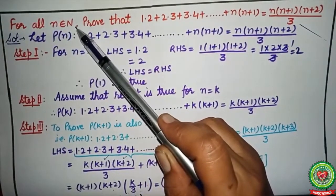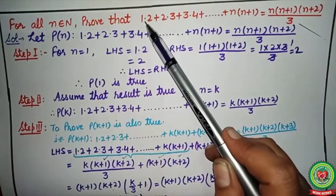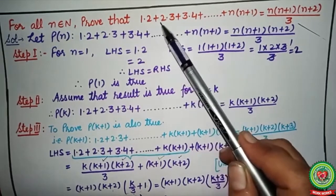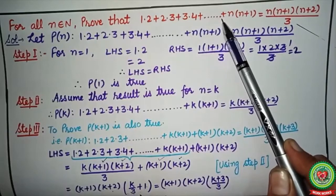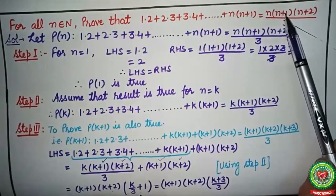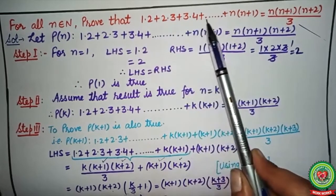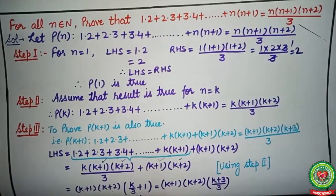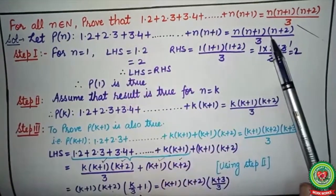Let's start with the first example. For all n belonging to N (natural numbers), prove that 1·2 + 2·3 + 3·4 + ... + n(n+1) is equal to n(n+1)(n+2)/3. Here terms are in multiplication, but we follow the same steps and pattern discussed for the previous example. First, consider the whole statement as P(n).